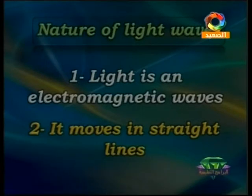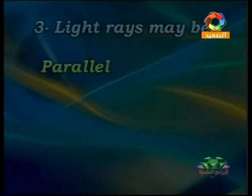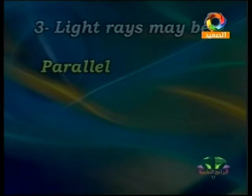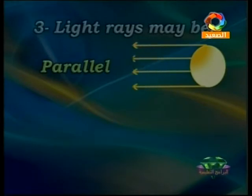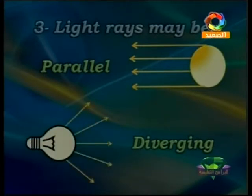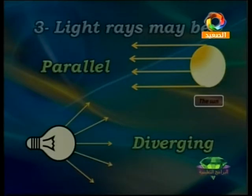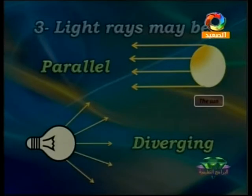Number two: light moves in straight lines. Number three: light rays may be parallel — parallel to each other — produced from a source like the Sun. Or they may be diverging light rays, which come out from a lamp in our house. It is very important to know the types of light rays: they may be parallel or diverging.